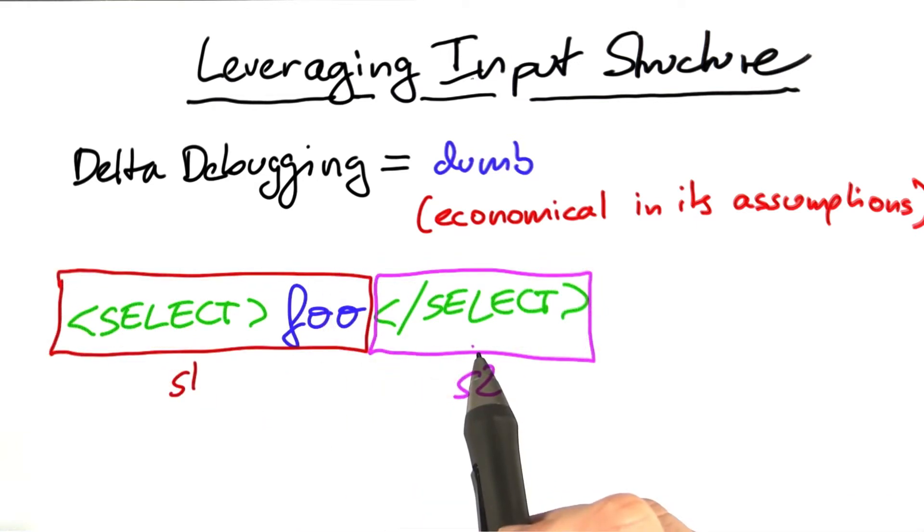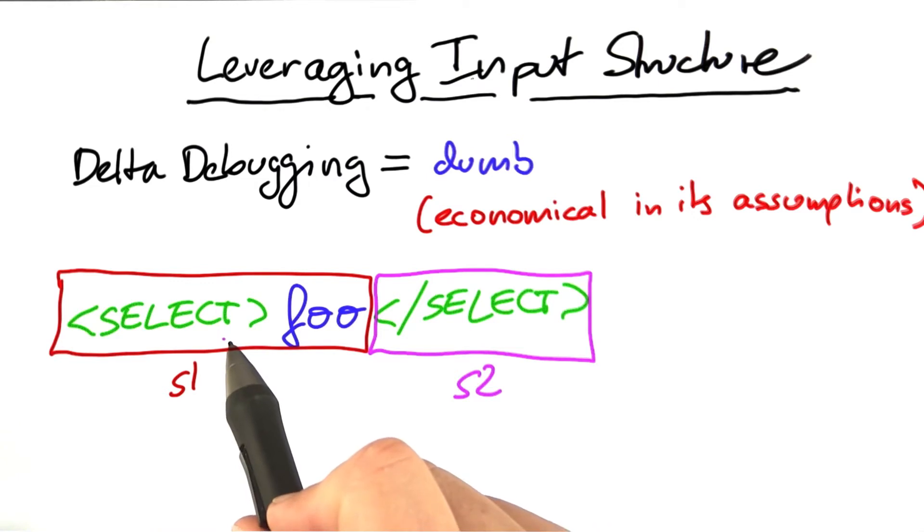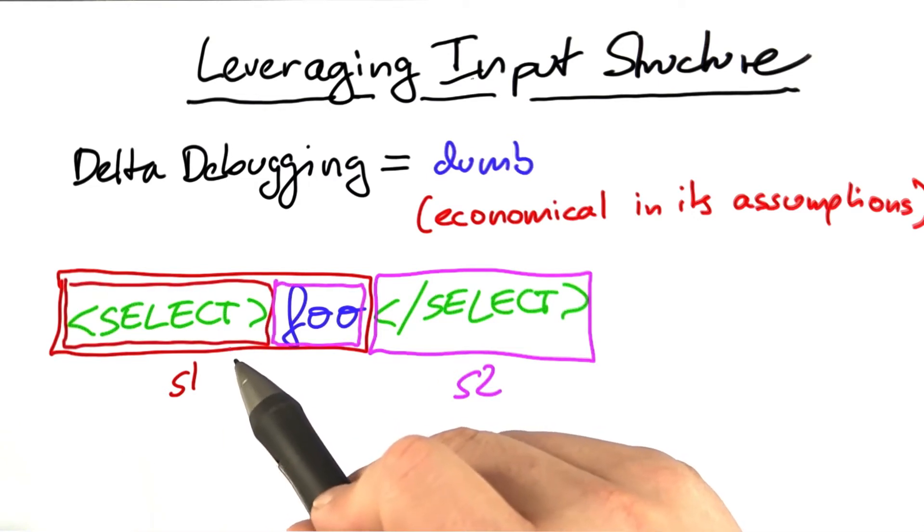Something like this, for example. And if you repeat this, now for the first substring, you will see that we will be able to simplify the input much faster, because now our simplification follows the structure of the input.